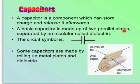Some capacitors are made by rolling up metal plates with dielectric in between. So here is the example. We have two pieces of aluminium foil as two parallel plates, and in between them there is this wax paper as the dielectric.